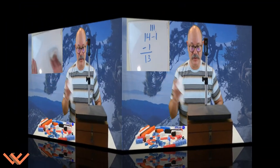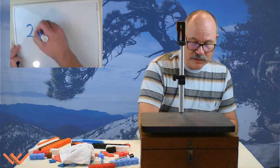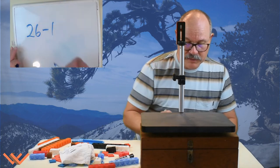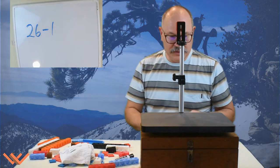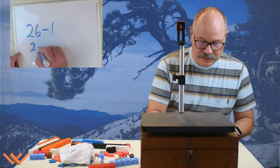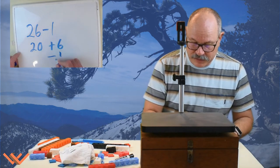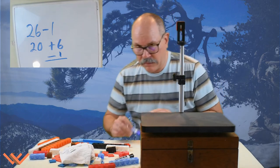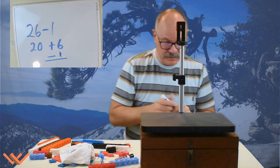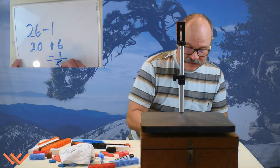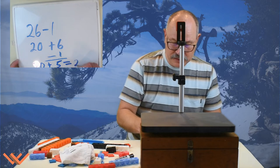Let's look at some other numbers — a bit larger. I have 26 minus one. Another way to look at this is to break it down: say 20 plus six minus one. Use your fingers. I have six, I take away one, I have five. So now that's five, and 20 plus five is equal to 25.